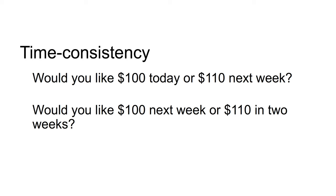An exponential discounter will choose $100 in both choices or $110 in both choices. The reason is that after one week, the second choice effectively becomes the same as the first choice. Time consistency implies that they will continue to want to make the same choice, regardless of when they are making it.